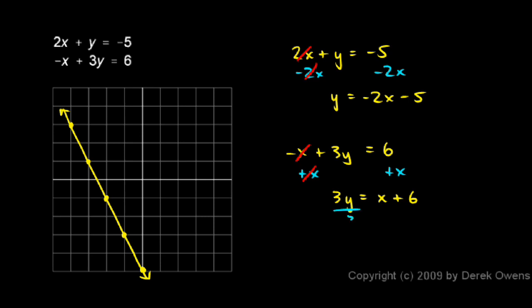And then I'll divide each side by 3, and the 3's cancel, and I get y equals 1 third x plus 6 over 3, which is just 2. So again, I get slope-intercept form, which is nice and easy to graph.